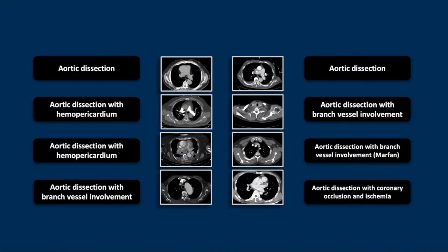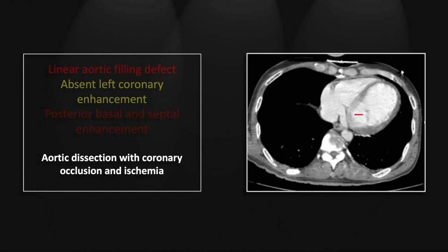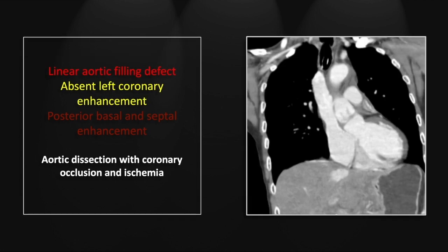Our last case is an aortic dissection with coronary occlusion and myocardial ischemia. Plainly visible is a linear filling defect in the aortic root, which at its leftward aspect can be seen to clearly pass over the left coronary ostium. In this plane you can appreciate the left main and its bifurcation, and none of these vessels shows any contrast opacification. Lower down you can see normal enhancement of the proximal septal and the posterior and inferior wall myocardium, with relative hypodensity of the remainder of the left ventricle consistent with occlusion of the left main.